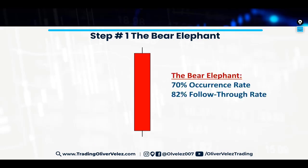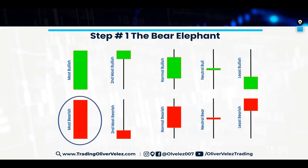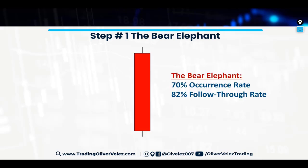The bear elephant bar in a bear market has a 70% occurrence rate. 70% of the time, out of all the other bars — look at all the red bars — you're going to see the bear elephant bar 70% of the time. The other 30% are the other bars, including the green ones, but especially the red ones. Out of all the red ones, that first red one is going to present itself 70% of the time. That's seven times out of every 10 times — a crazy high occurrence rate.